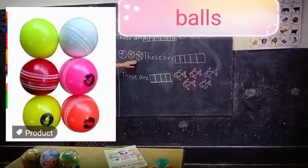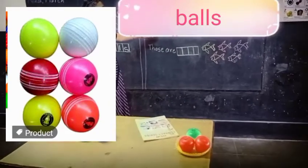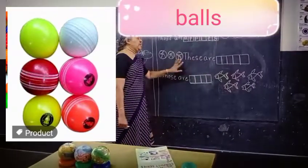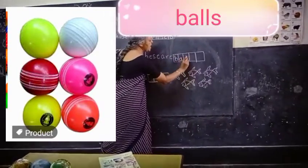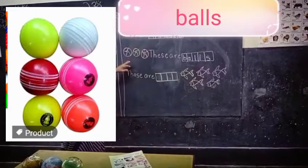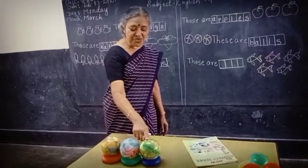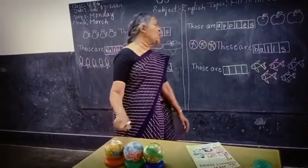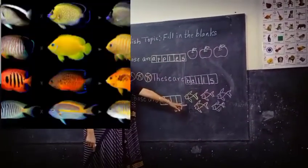Can you see this picture, children? These are Balls — B-A-L-L-S, Balls. So we have to write 'These are Balls.' You have to learn the spelling of Balls. This is very near — these are Balls. These are Balls.